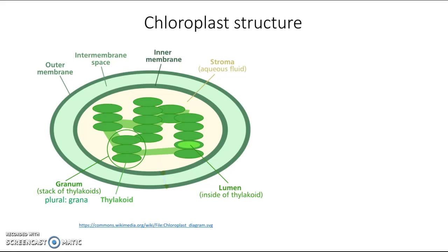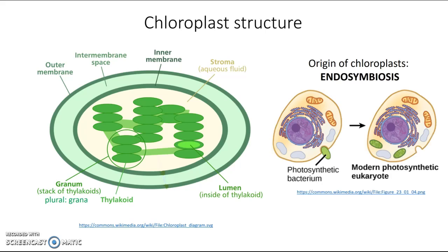Make sure you have these in your notes and can identify and label them. While we're here, the origin of chloroplasts is through a process called endosymbiosis, similar to mitochondria. A precursor eukaryotic cell may have engulfed a smaller photosynthetic bacterium via endocytosis. Under normal circumstances it would have digested it, but for whatever reason that bacterium wasn't broken down and kept living inside the cell. Because it worked out well for both of them, they developed a symbiotic relationship that persists to this day.